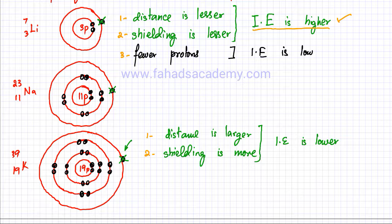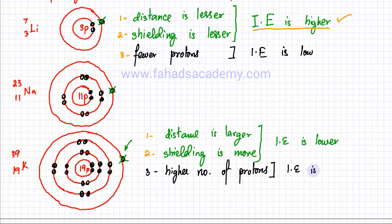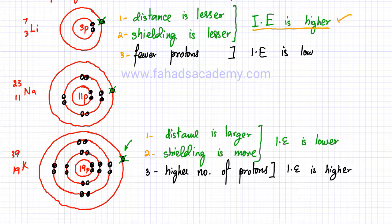Now if you look at the third factor for potassium — the number of protons — there are 19 protons, which means it has a higher number of protons. This one factor would suggest that the attraction by the protons would be stronger and ionization energy would be higher. However, since two factors suggest ionization energy is lower and only one suggests it is higher, the overall effect is that the ionization energy would be lower.